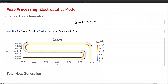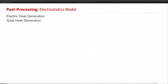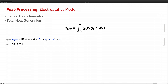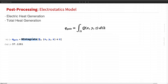We can also calculate the total heat generation over the entire domain by integrating over the domain. In the Wolfram language we have a function called NIntegrate, and we find the total heat generation is about 37 watts. As you can see, doing this kind of post-processing in the Wolfram language is very easy because it is an integrated software with many powerful functions for numerical computing.